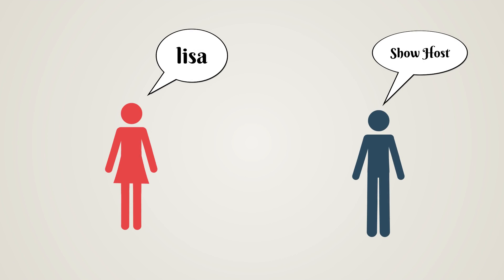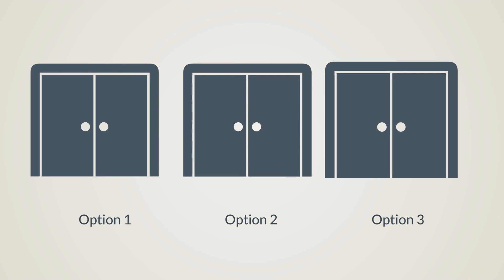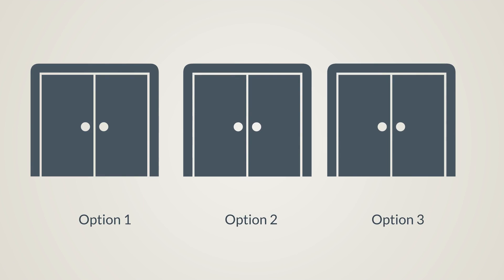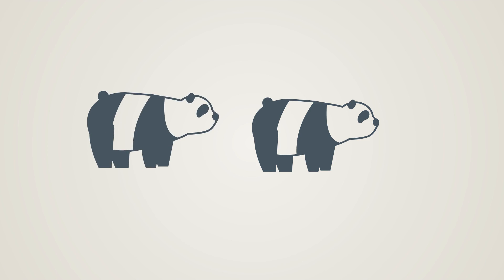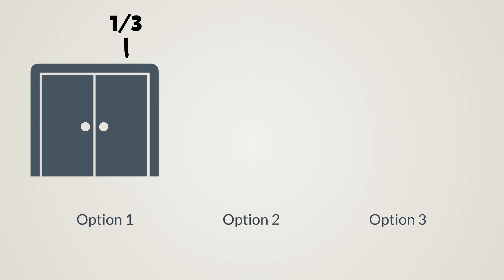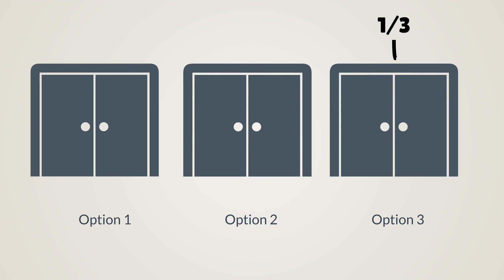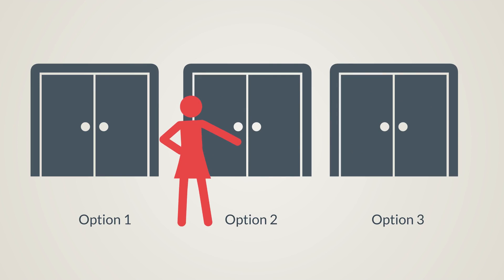Consider a game in which there is a show host and a contestant named Lisa. There are three doors. At the back of one door there is an iPhone and at the back of the other two there is a bear. She has to choose one of the doors and the probability of getting the right door is one third. She has chosen the second door.